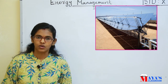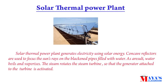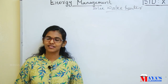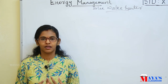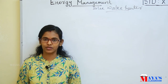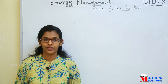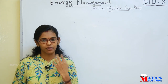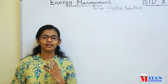The solar thermal power plant generates electricity using solar energy. Concave reflectors are used to focus sunlight on blackened pipes filled with water. As a result, water boils and vaporizes. The steam rotates the steam turbine so that the generator attached to the turbine is activated. So we have discussed solar cooker, solar water heater, solar cell, and solar thermal power plant.